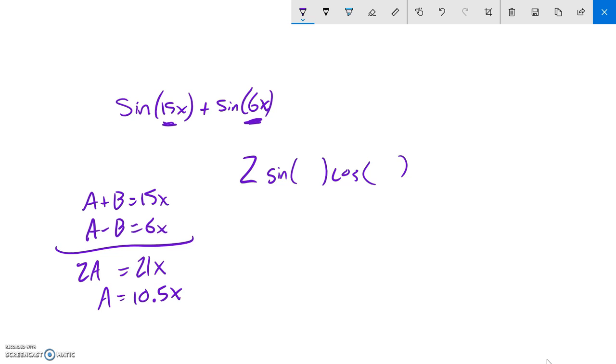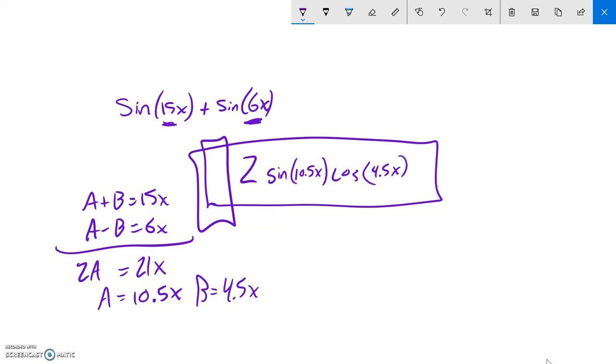And if A equals 10.5x, I would need 4.5x to get up to 15x, so B must equal 4.5x. So A is 10.5x, B is 4.5x, neither of those are negative. Done.